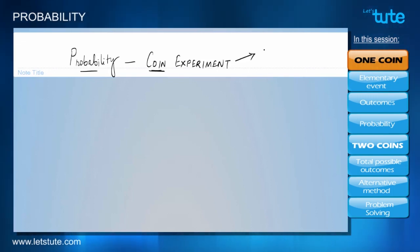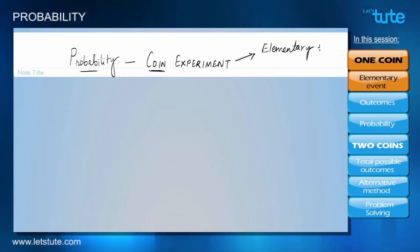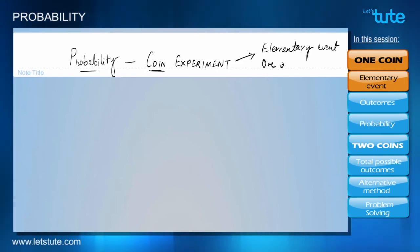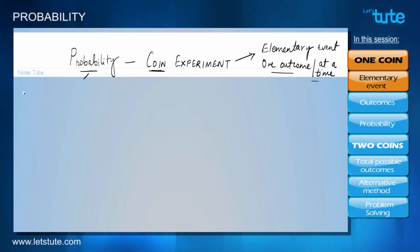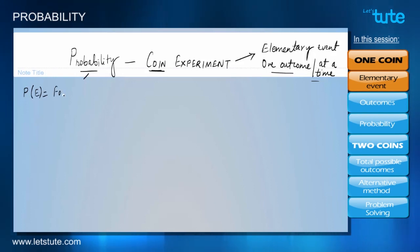The coin experiment involves the use of a coin and it is an elementary event. We call it an elementary event because there is only one outcome that can appear at one point of time, which we will see as we move further.